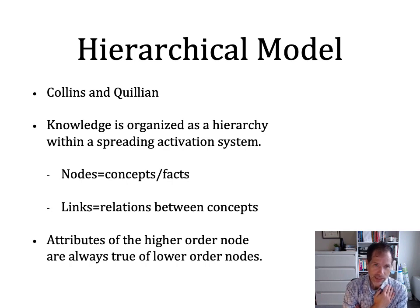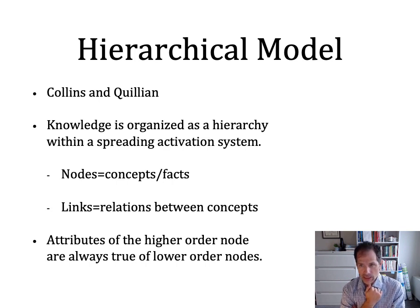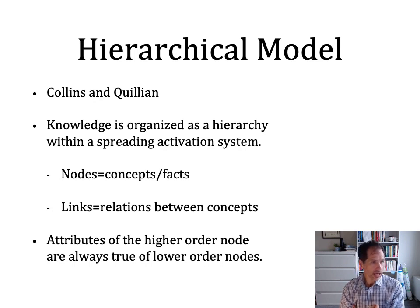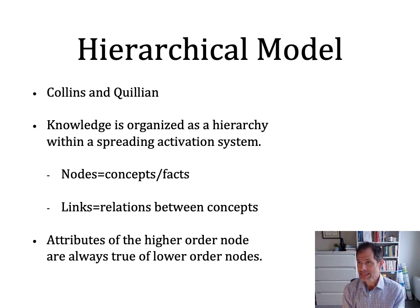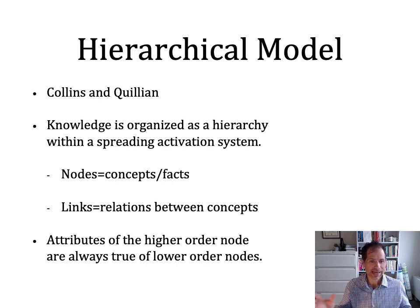One of the earliest attempts to explain how humans represent knowledge goes back to some early work done by Collins and Quillian. Collins and Quillian suggested that we store a lot of our knowledge about the world in a hierarchical system. One of the reasons they were interested in a hierarchy is that a hierarchy saves memory space. We're going to call each piece of information a node on a hierarchy, and this knowledge is organized in a hierarchy within a spreading activation system.